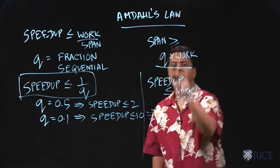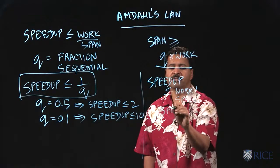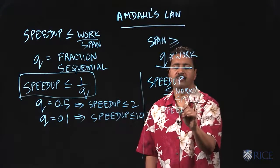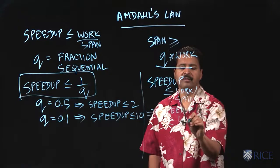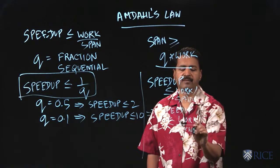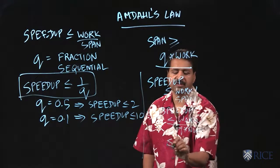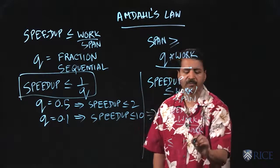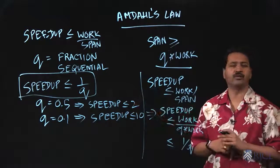And putting these two together, we get speedup less than equal to work divided by q times work, which means it's less than equal to one over q. So it's actually very easy to prove Amdahl's law using what you've learned.